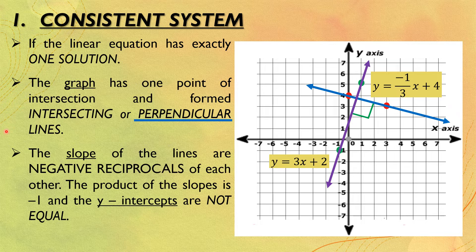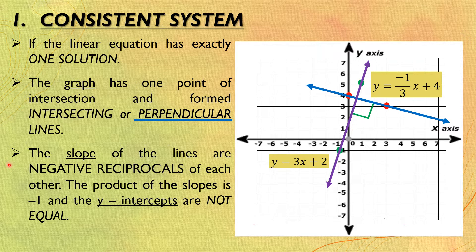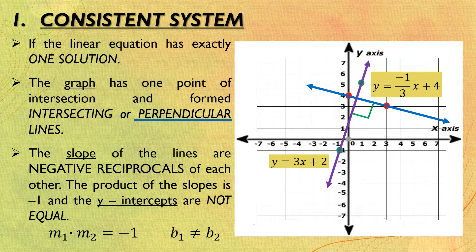For the perpendicular line, the slopes of the lines are negative reciprocals of each other. The product of the slopes is negative one, and the y-intercepts are not equal. So for the consistent system: when the lines form intersecting lines, the slopes are not equal and the y-intercepts are not equal. When the lines form perpendicular lines, the product of the two slopes is negative one and the y-intercepts are not equal.